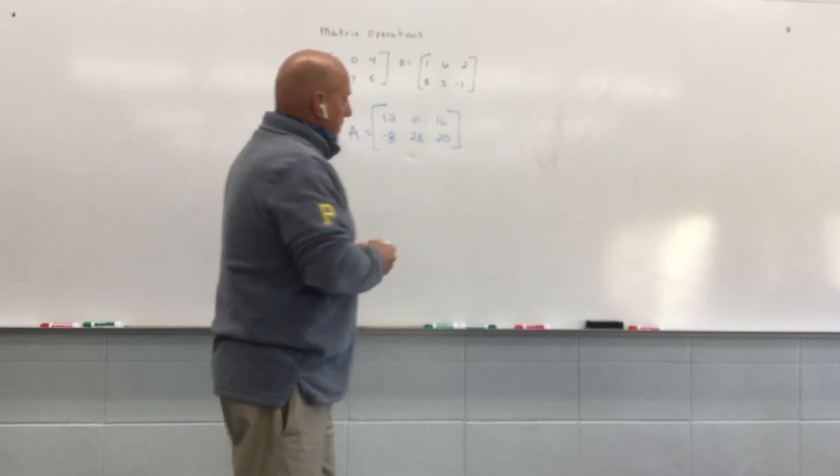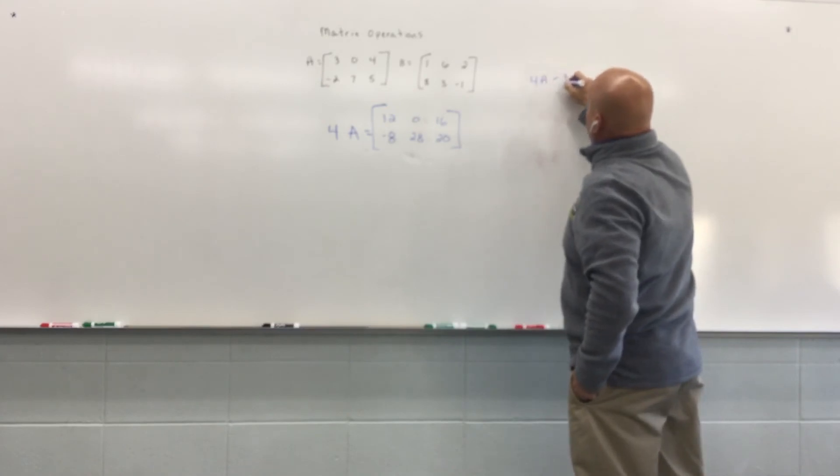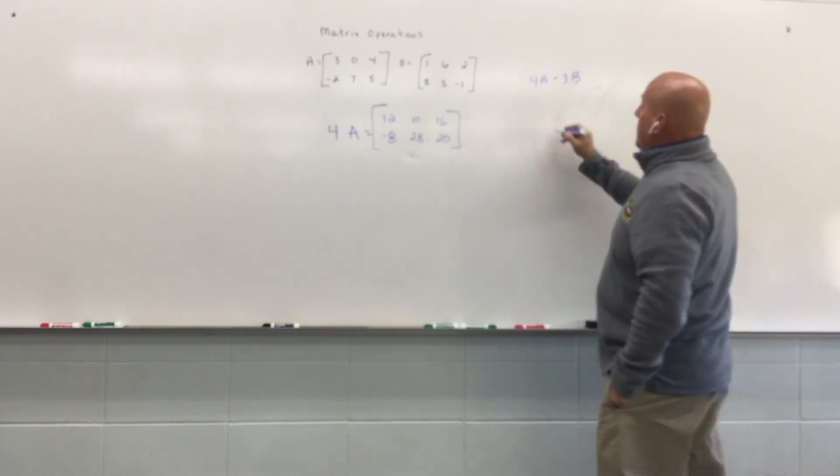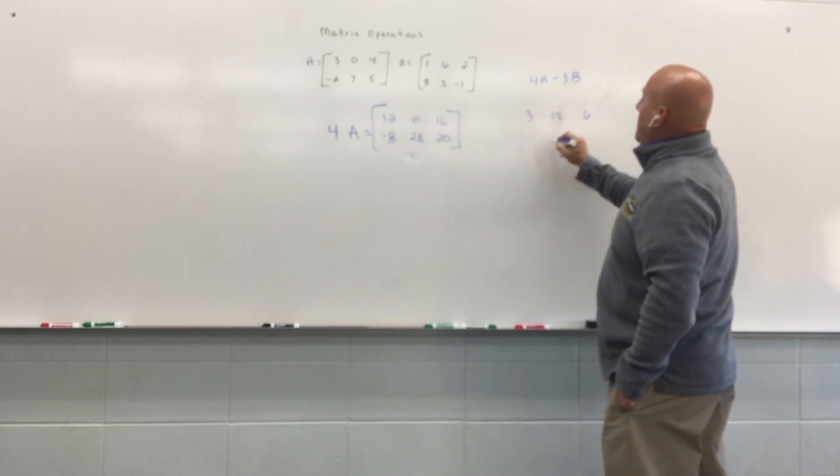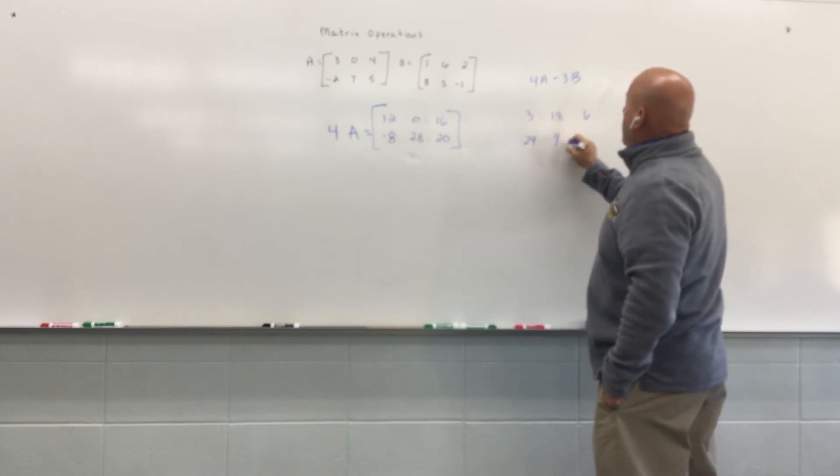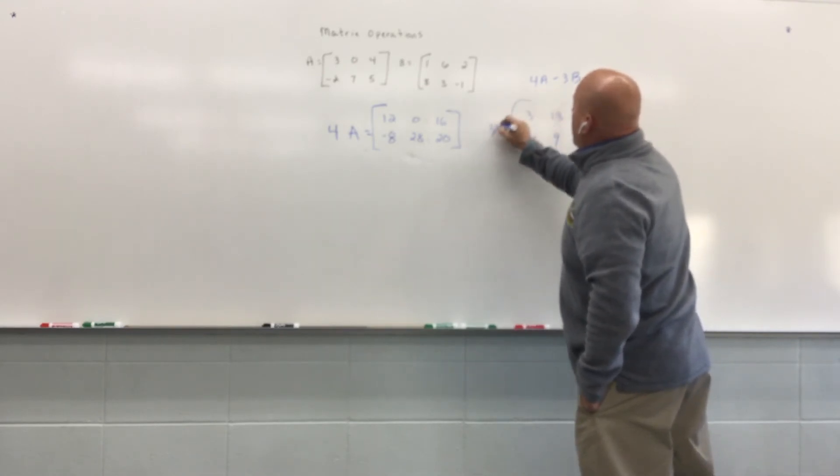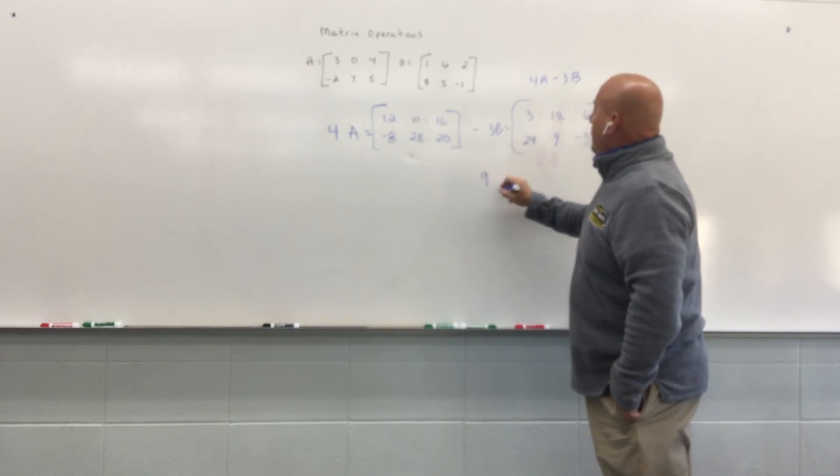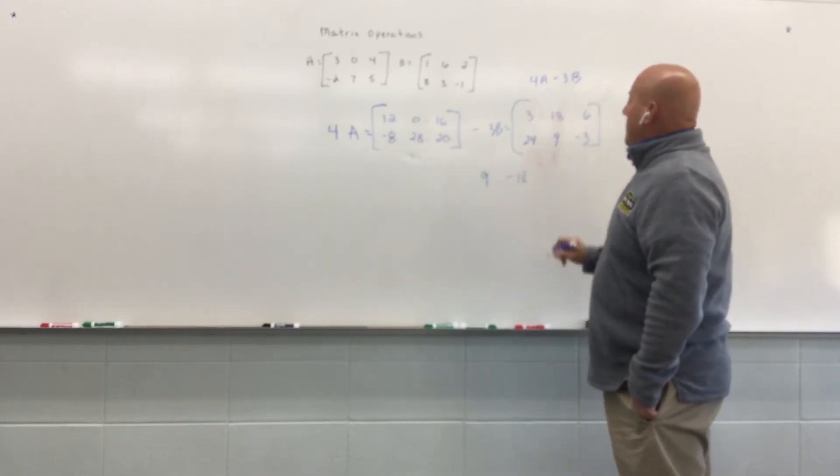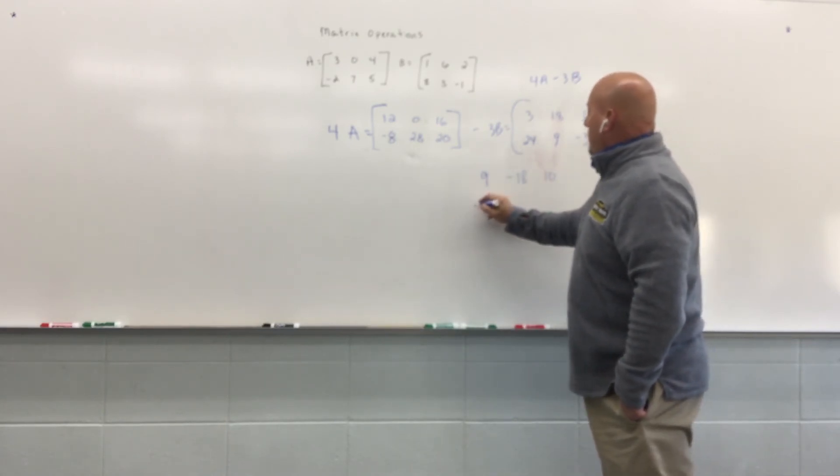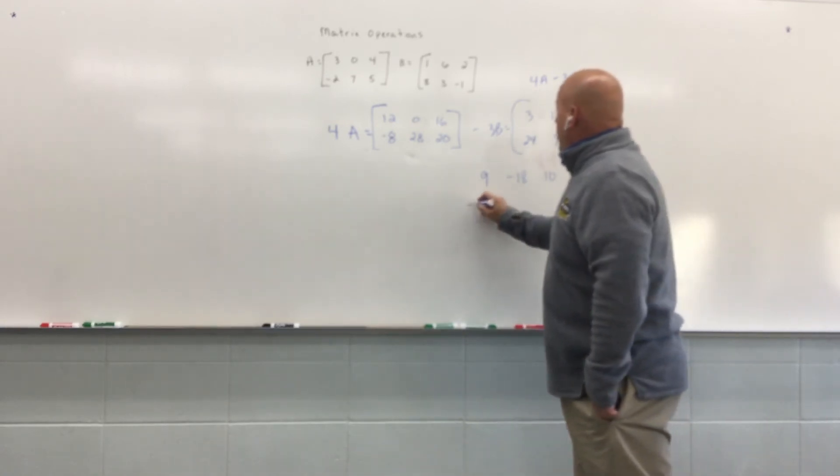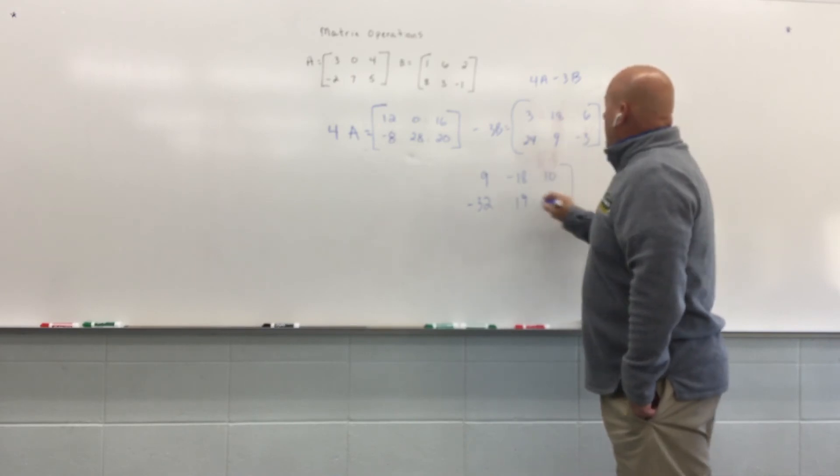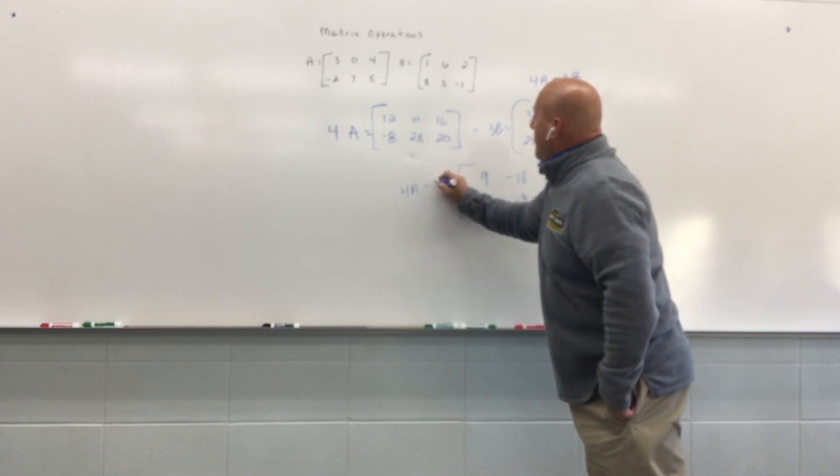And we could do things where we take, for instance, we could have 4A minus 3B, where in this case we're going to have to perform multiplication first. So 3B will be 3, 18, 6, 24, 9, negative 3. And then I would subtract those two values. So 12 minus 3 is 9, 0 minus 18 is negative 18, 16 minus 6 is 10, negative 8 minus 24 would be negative 32, 28 minus 9 is 19, 20 minus negative 3 is 23. And so there would be the value of 4A minus 3B.